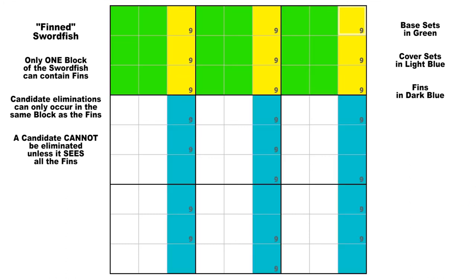And then lastly, if you see something like this, where the three base sets are all in the same chute, then an extra candidate 9 here is not going to do anything because there is nothing left to eliminate in that block. The three cells that would be in the cover sets are all taken up in block 3. So you would still have the eliminations from the locked candidates type 1 in blocks 1 and 2, and all the other 9s in column 3 and column 6 would be false. You would not view this as a finned swordfish.